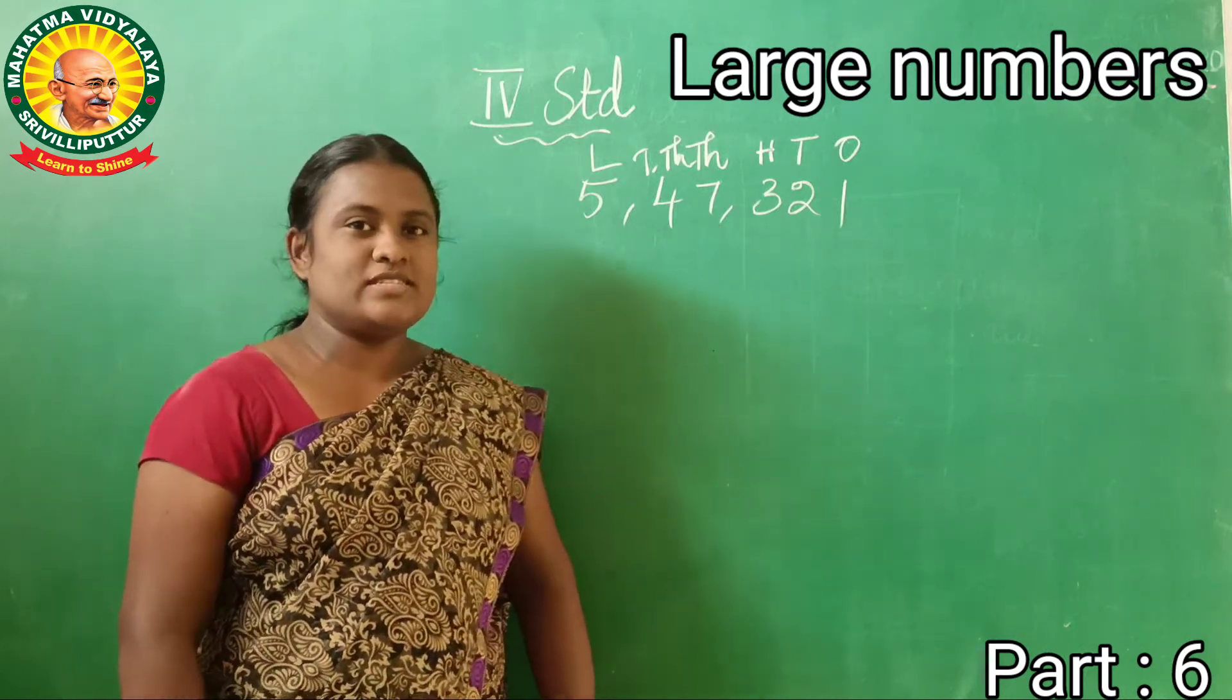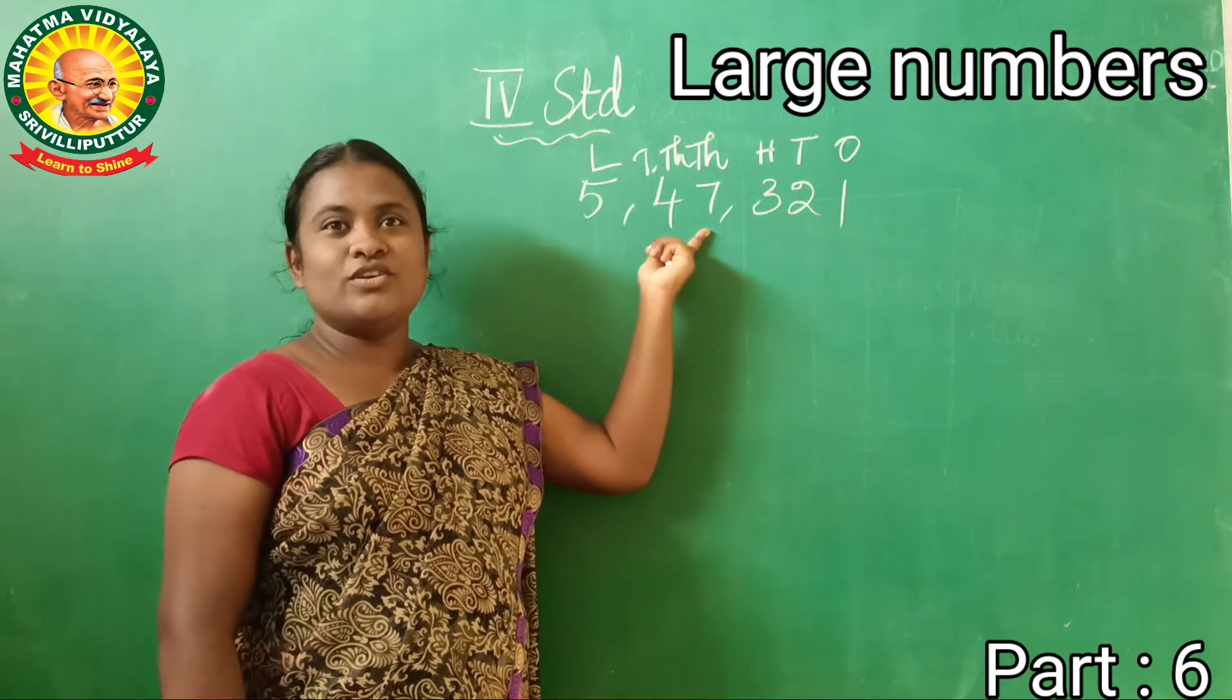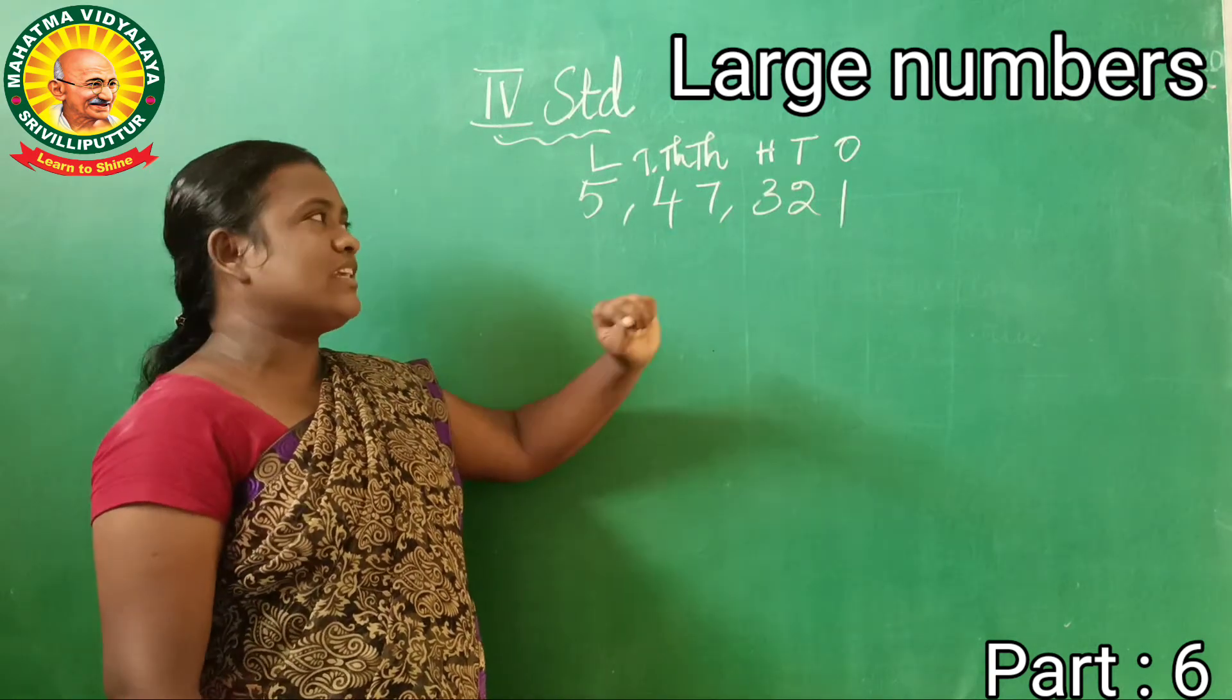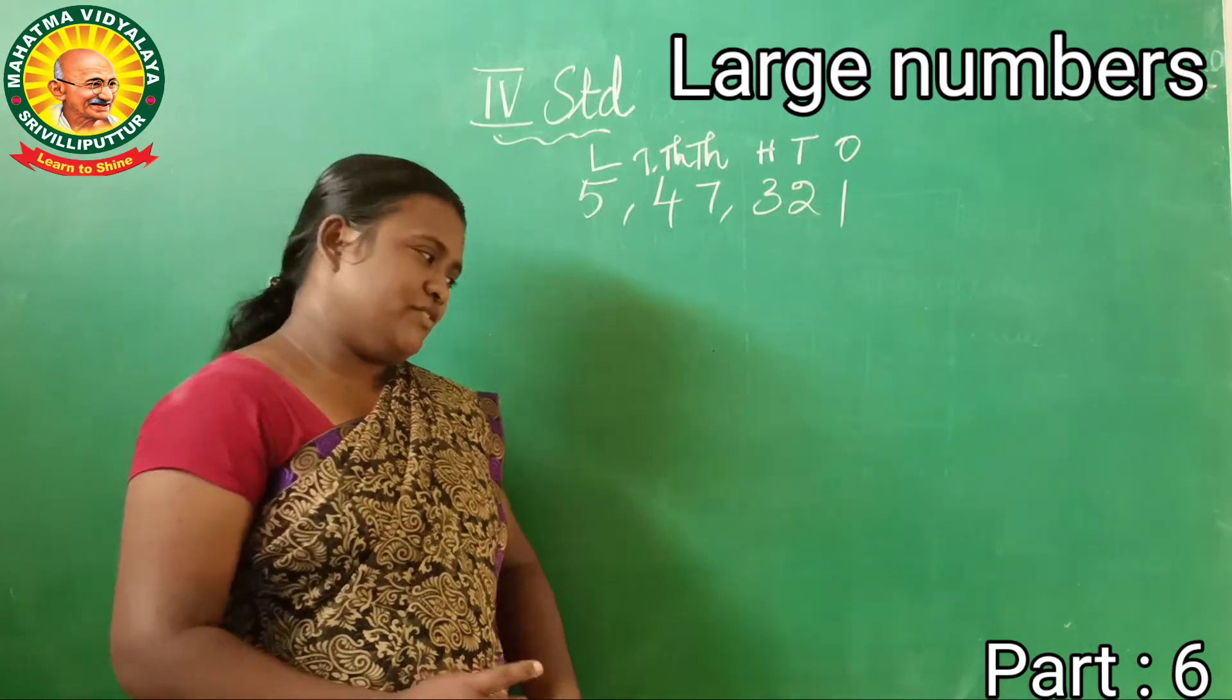The face value of seven is? Seven thousand. No. Yes, seven. Very good. The face value of two is? Two. Very good.